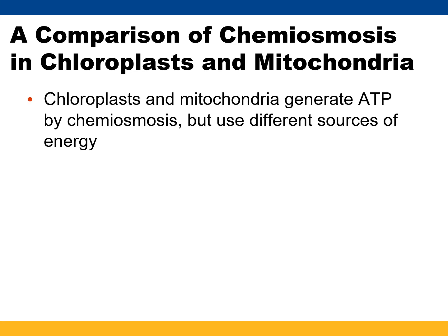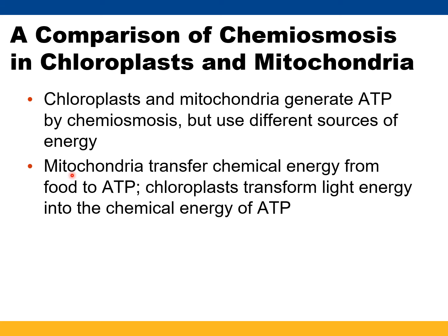Now that we've gotten through the light reactions, let's compare the chemiosmosis mechanism in chloroplasts and mitochondria — what makes them similar and what makes them different. They both generate ATP, both use a proton motive force, both use ATP synthase, and both use electron transport. Mitochondria insert electrons via carbohydrates and fats — acetyl CoA, citric acid cycle, or in some cases through glycolysis — whereas chloroplasts use water and carbon dioxide.